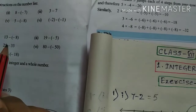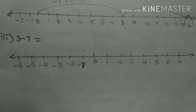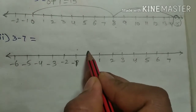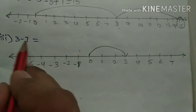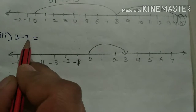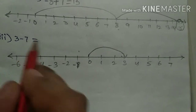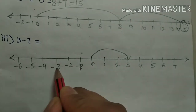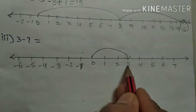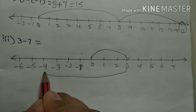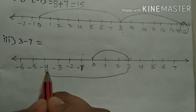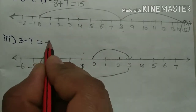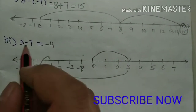Next: 3 minus 7. See here — first, move from 0 to 3. Next, here we are subtracting a positive integer 7. So move to the left side. Count here: 1, 2, 3, 4, 5, 6, 7. Circle it. What is the answer now? Minus 4. So correct only, it came now like this.